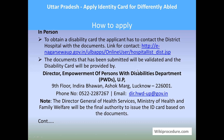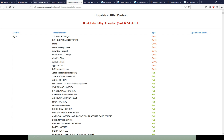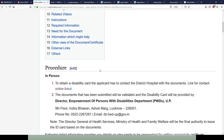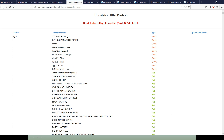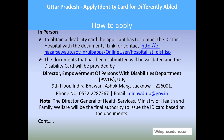Once you have all these documents, you are ready to apply. Let us see how to apply in person. Persons applying for a disability card can apply through the district hospital with the documents mentioned. The link for the district hospital provided on our page under the 'Apply in Person' section will take you to a list of district-wise hospitals. The submitted documents will be validated and the disability card will be provided by the Director, Empowerment of Persons with Disabilities Department (PWD), UP, 9th Floor, Indira Bhavan, Ashok Marg, Lucknow. Phone number and email ID are provided.